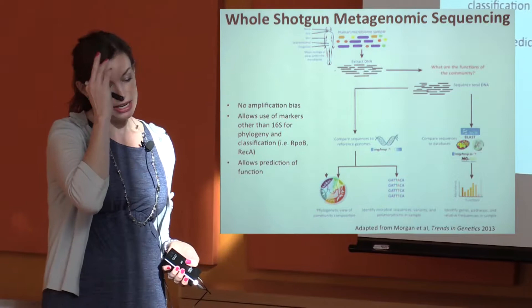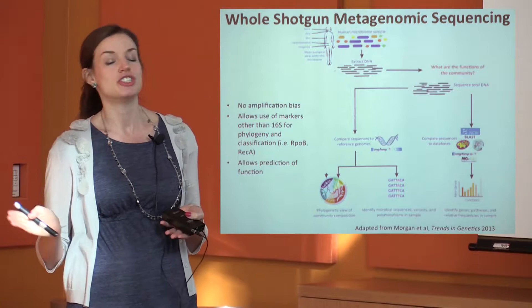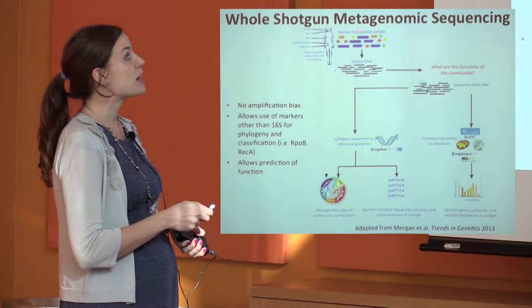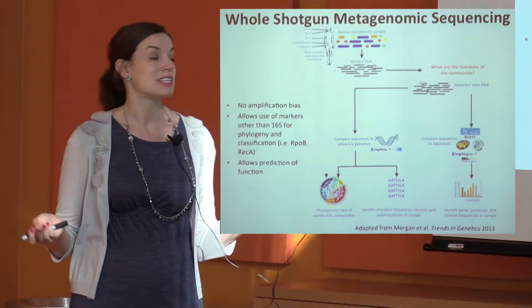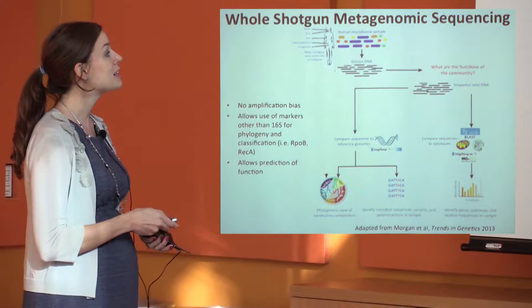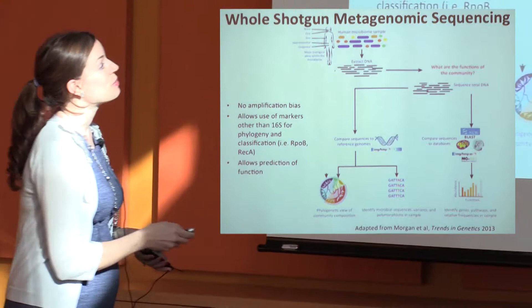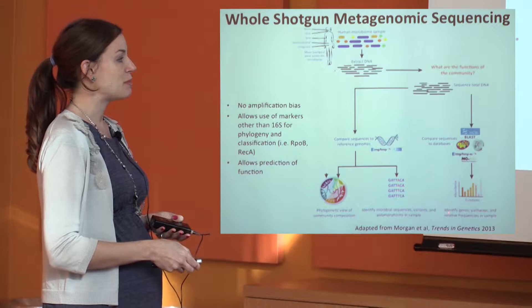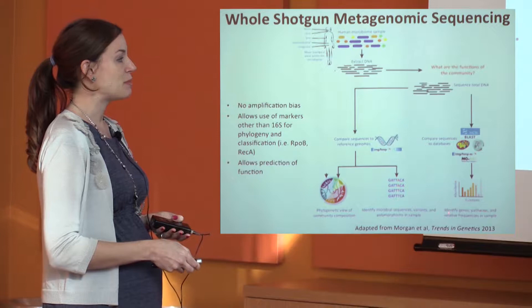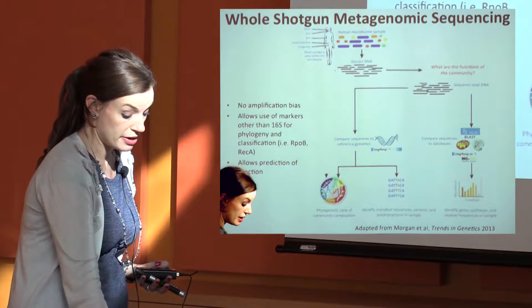Another technique becoming more popular is whole shotgun metagenomic sequencing, which isn't based on any particular gene at all. You take the same microbiome sample and sequence all the DNA from the skin swab — that way you don't have amplification bias. You can use markers other than the 16S to identify bacteria, and that allows you to make predictions about the functions of the bacteria. From this total DNA, you have many genes, and depending on what kind of genes the bacteria have, you can identify different genes and pathways that may be enriched in your sample.